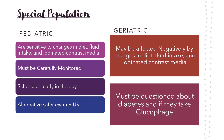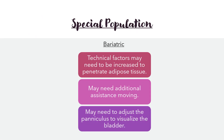Special populations: Pediatrics are very sensitive to changes in diet, fluid intake, and iodinated contrast media, so they must be carefully monitored, scheduled early in the day, and an alternative exam such as ultrasound considered. Geriatrics may also be negatively affected by changes in diet, fluid intake, and iodinated contrast. They must be questioned about diabetes and if they take glucophage. For bariatric patients, technical factors may need to be increased to penetrate adipose tissue, and you may need to adjust to visualize the bladder.